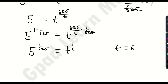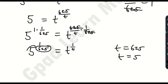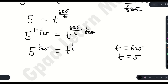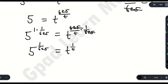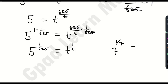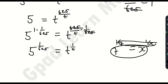Now we have 5^(1/625) = t^(1/t). We can't boldly say t equals 625 or t equals 5 yet, because for the comparison to work the base and the denominator of the exponent must match. For example, if you have 7^(1/7) = x^(1/x), because the base and exponent match you can say x equals 7. That's the same logic we'll apply here.